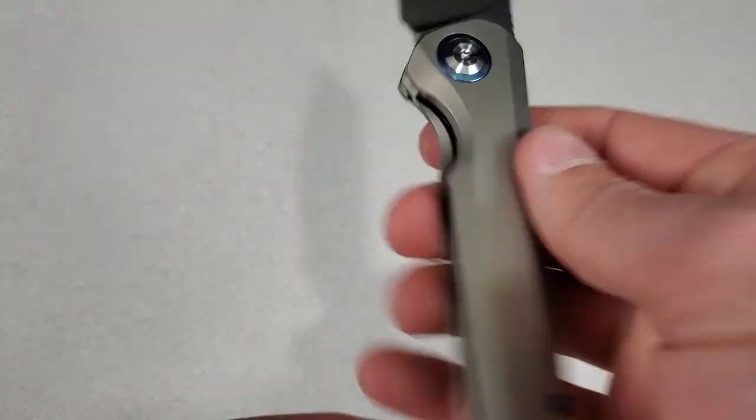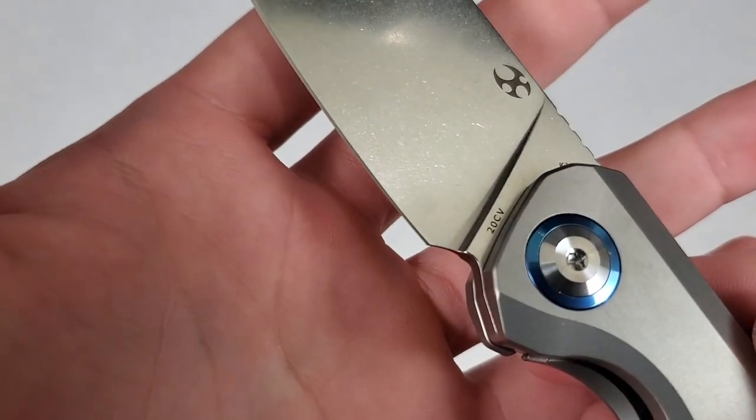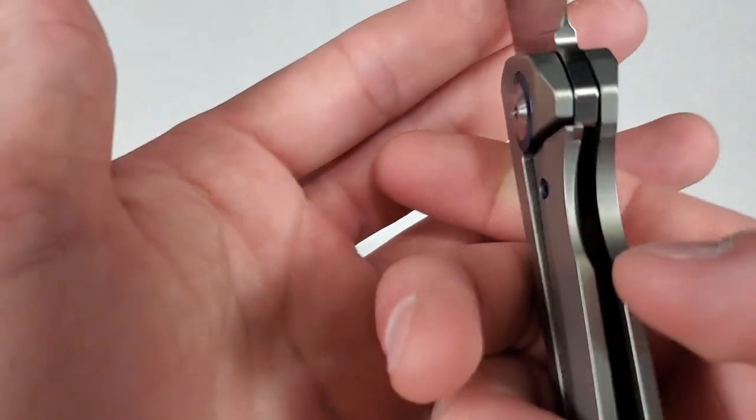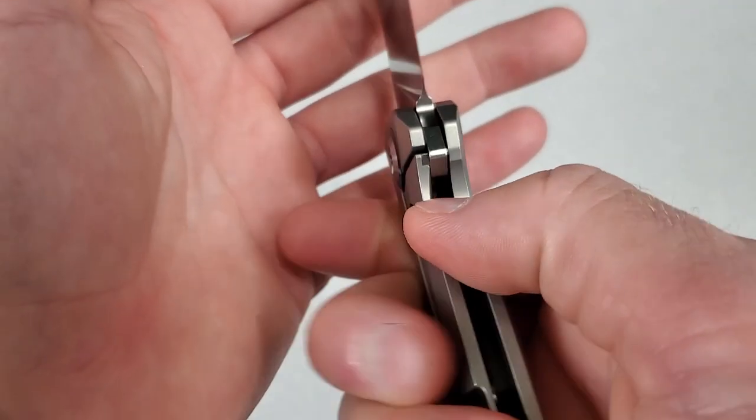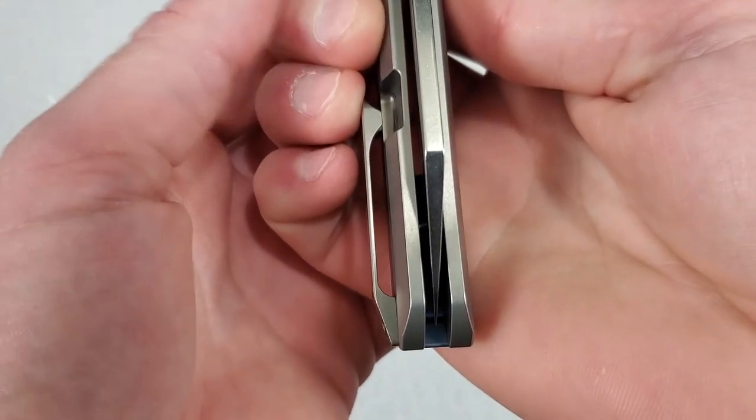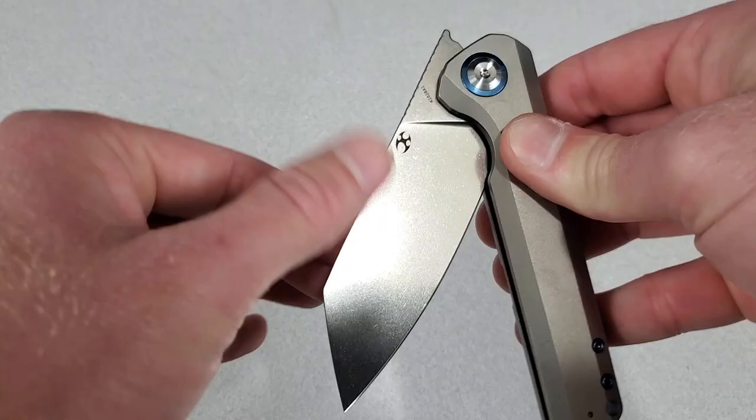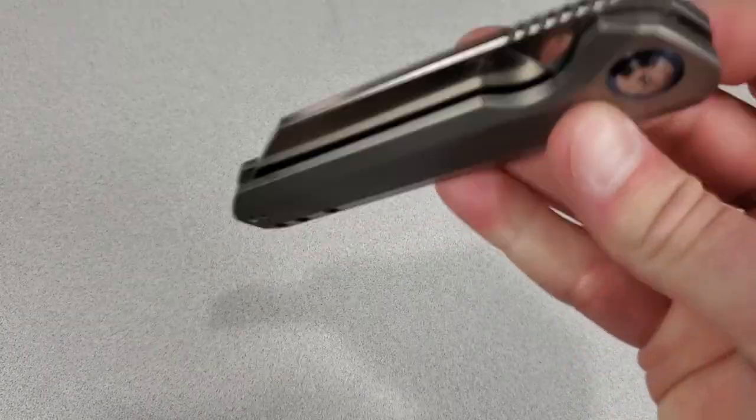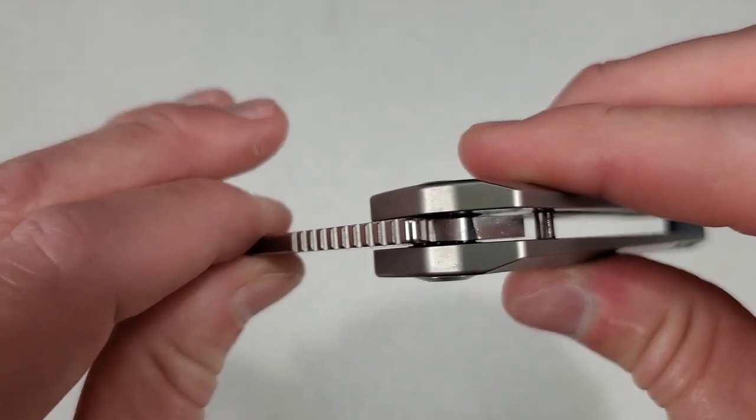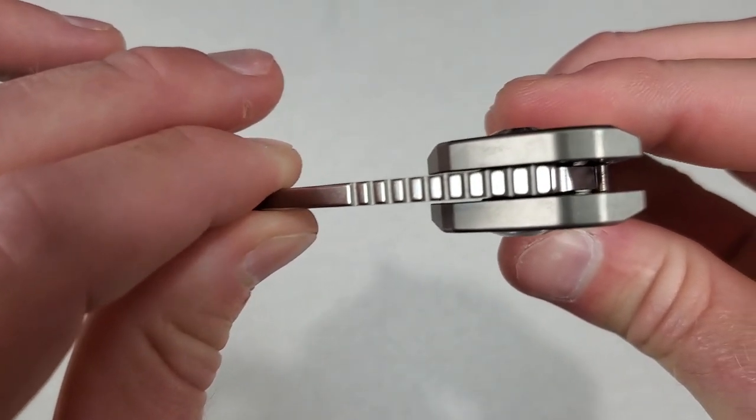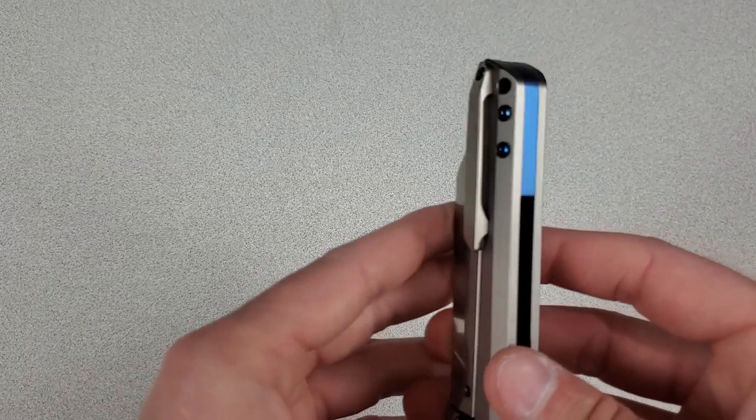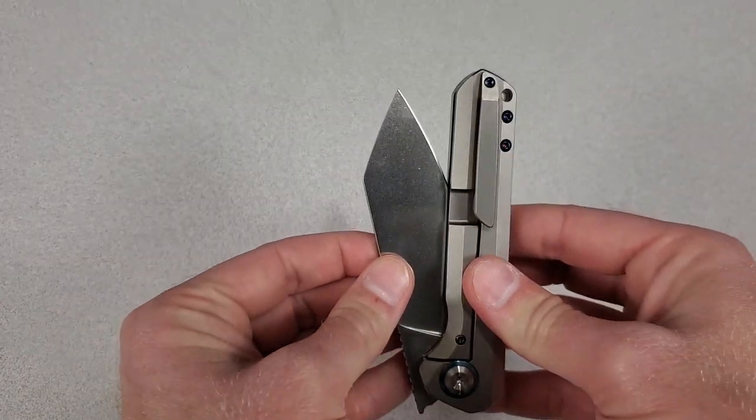The blade steel is CPM 20CV with a flat grind. It deploys with a front flipper. And it's a frame lock with a replaceable lock bar insert. The lock up is good, about 30%, and the centering is good. Dead center. Good detent and great closing. Great action overall. It looks and feels like it might have bigger bearings than your average pocket knife or multi-row bearings, but I haven't taken it apart yet. There's a titanium backspacer, lanyard hole, and a milled titanium pocket clip that is tip up right or left side.